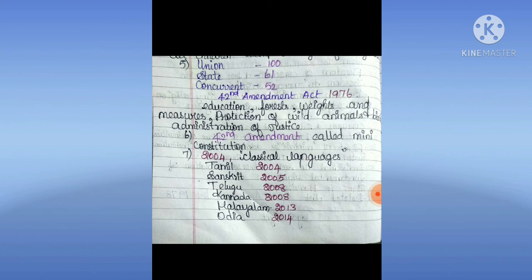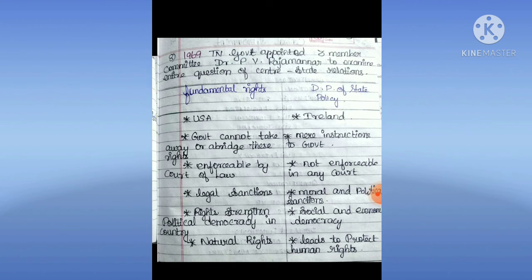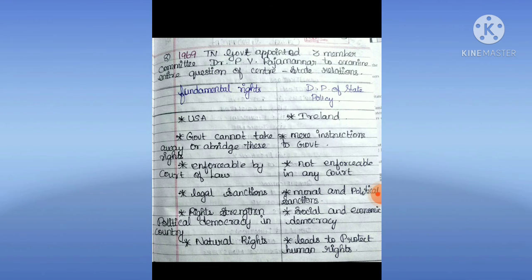Classical languages: Tamil (2004), Sanskrit (2005), Telugu (2007 — Thalinga), Kannada (2008), Malayalam (2008), Odia (2013). In 1969, the Tamil Nadu government appointed a three-member committee under Dr. P.V. Rajamannar to examine entire questions of centre-state relationship. Fundamental rights are taken from USA; Directive Principles of State Policy are taken from Ireland. Government cannot take away or abridge fundamental rights — enforceable by court of law. Directive Principles are mere instructions of government — not enforceable in any court. Fundamental rights carry legal sanctions; Directive Principles carry moral and political sanctions. Rights strengthen political democracy; Directive Principles aim at social and economic democracy. Fundamental rights protect individual human rights.